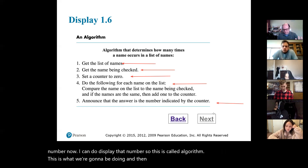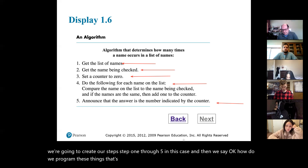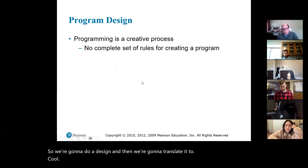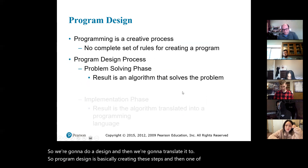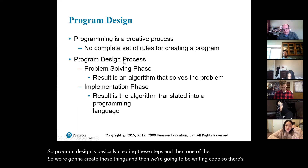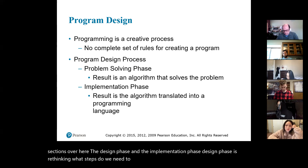We're going to program each step of this. First we create our steps — step one through five in this case — and then we figure out how to program them. That's why we call this a design form. We do a design and then we translate it to code. Program design is basically creating these steps. There are two sections: the design phase and the implementation phase. The design phase is thinking about what steps we need to take, and the implementation phase is taking those steps and writing code for it.